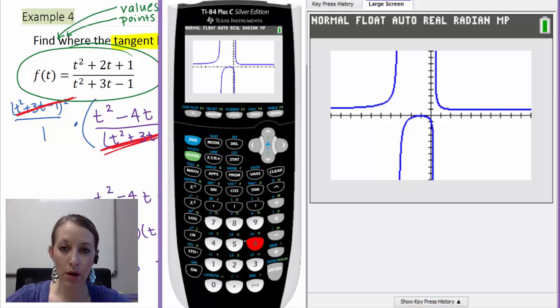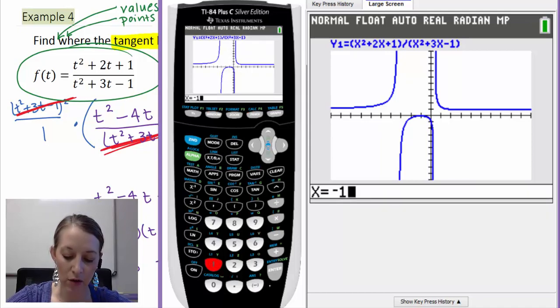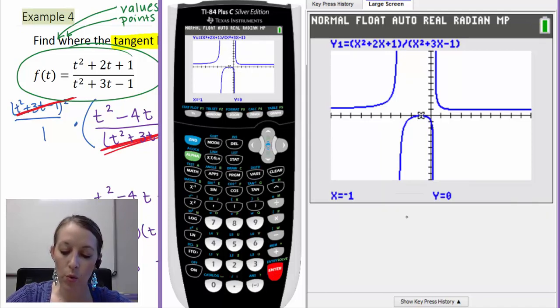Now the two places that we came up with is at negative 1 and 5. So let's test those. If I type my trace button and I substitute in my negative 1 value, we confirm that we have the right Y value of Y equals 0, and it also confirms that it looks like a peak here. If I were to try and draw my tangent line with the same slope, my tangent line would be drawn as a horizontal line here.